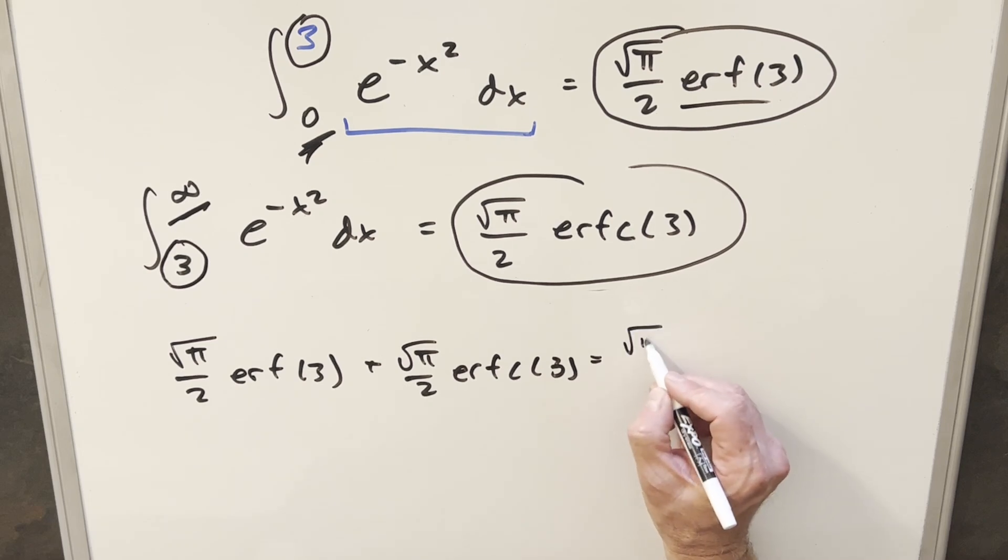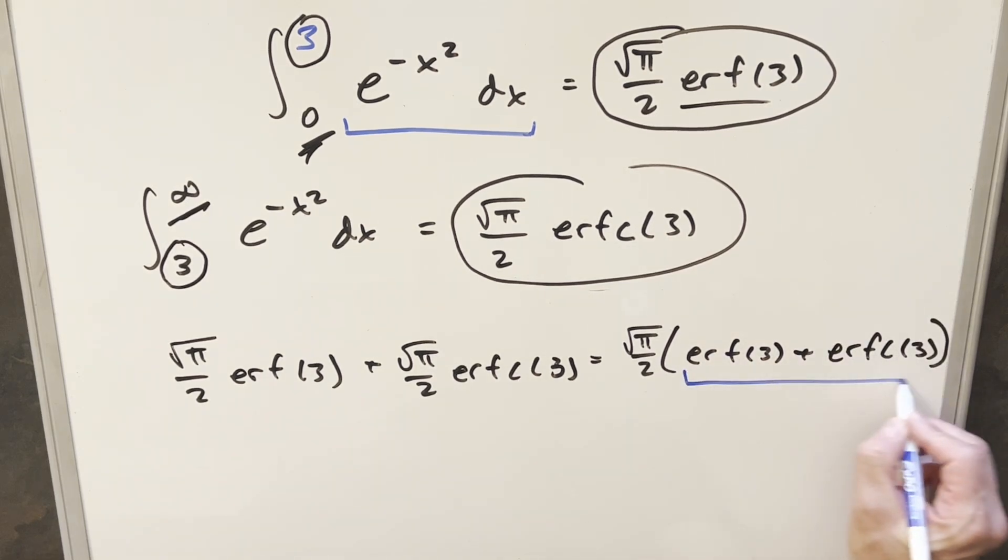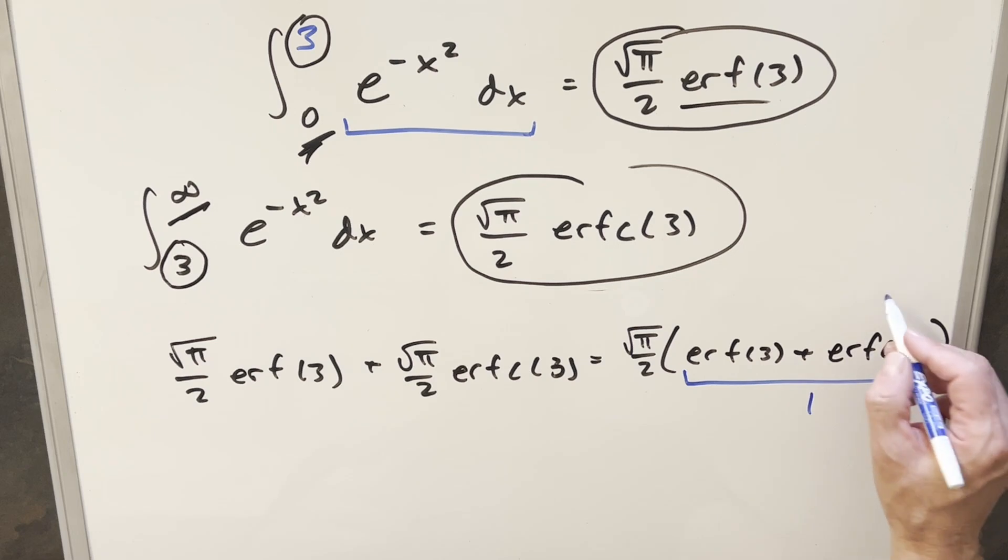Well, I can factor out square root of pi over 2 here, and then what we have is the error function at 3 plus the complementary error function at 3. But this value right here is actually defined to be just 1.